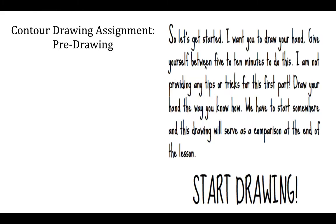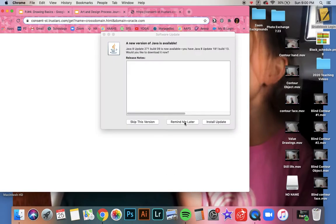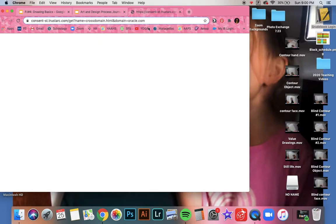Before we do that, I need to see how you can draw. You're going to take five to ten minutes — I'm not going to provide any tips for this first part. We're going to do this in class together, so if you missed it you'll want to do this first. Draw the best hand you could possibly draw, then make sure you're putting the photo into your process journal and labeling it as your 'first hand drawing.'